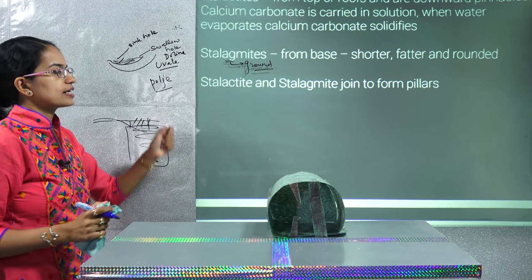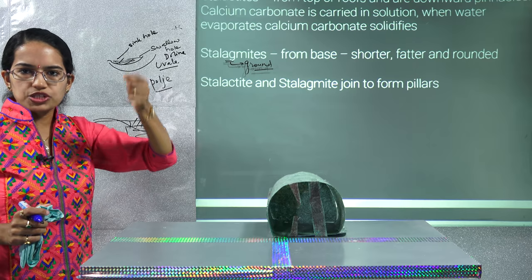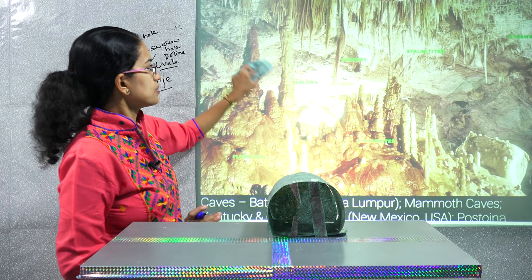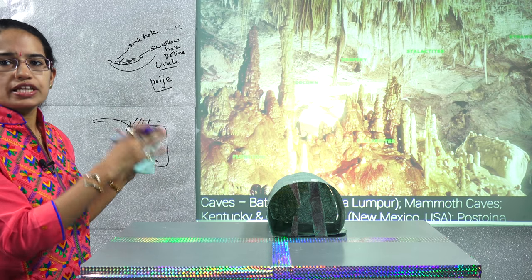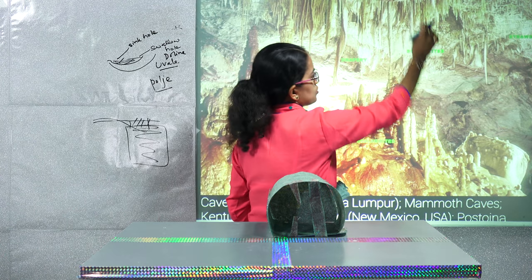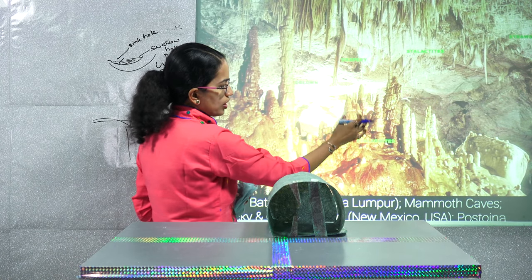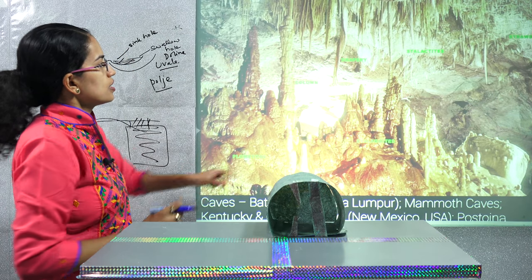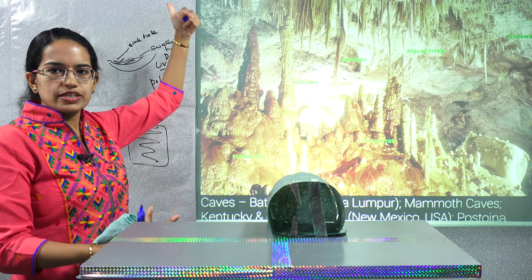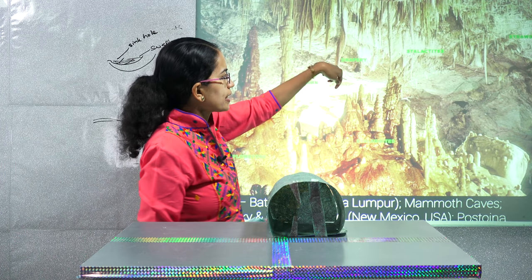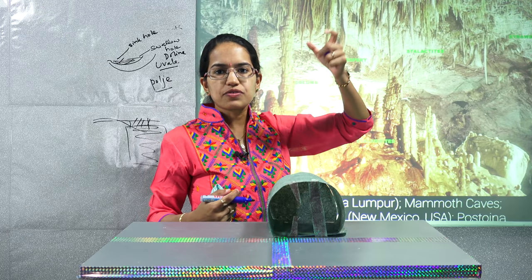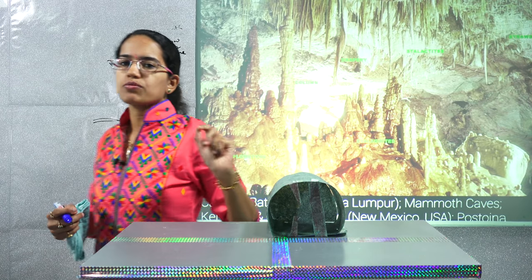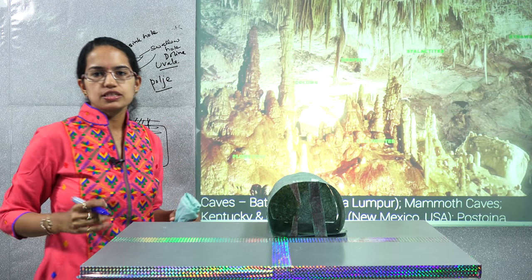Stalagmites originating from the ground are smaller, rounder, and fatter compared to stalactites, which are thinner, appear as pinnacles, and are depositions seen on the rooftop. Other cave features include: flow stone (the flow of mineral material), columns or pillars where stalactites and stalagmites join, drapery (curtain-like formations), and straws (very thin particles from the rooftop).